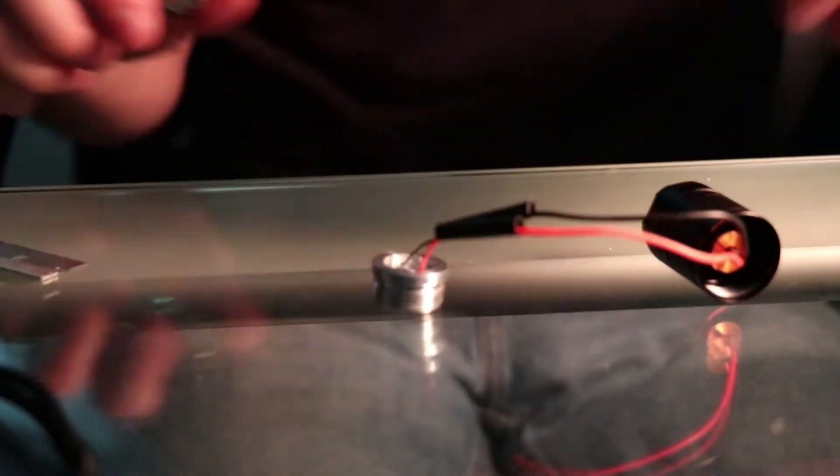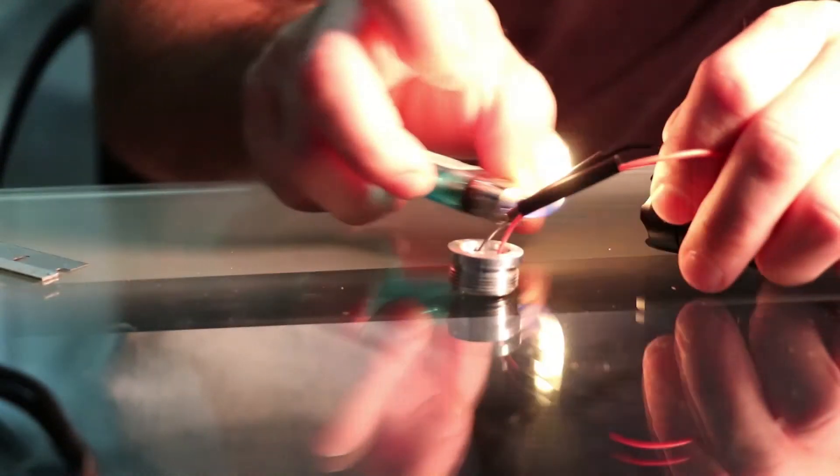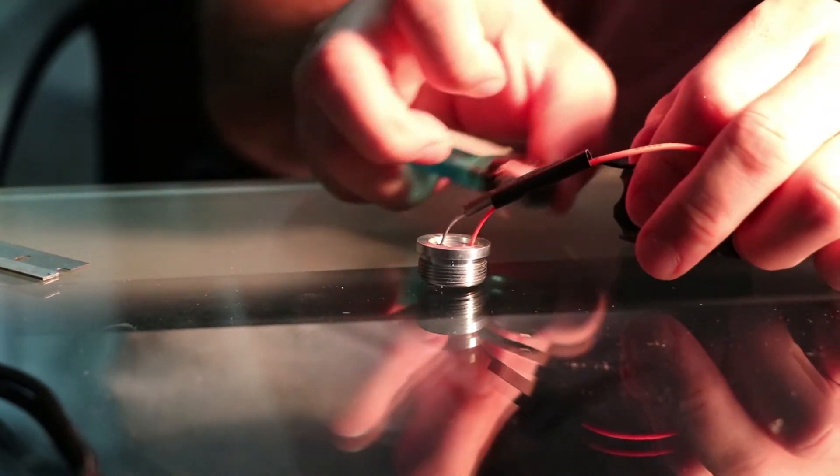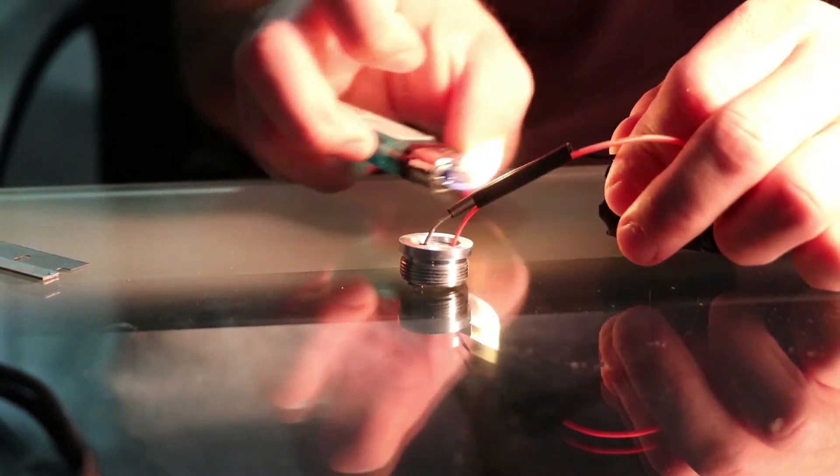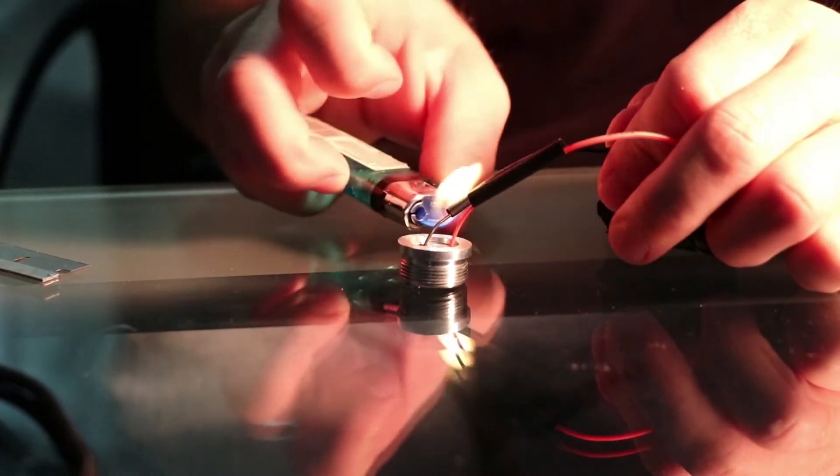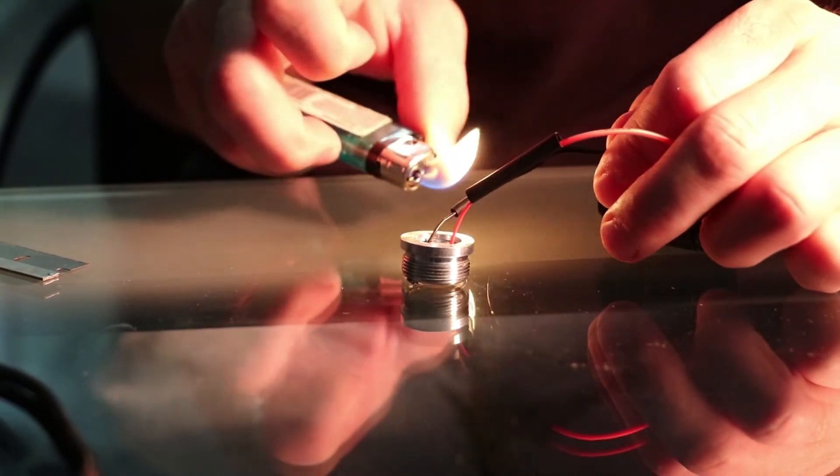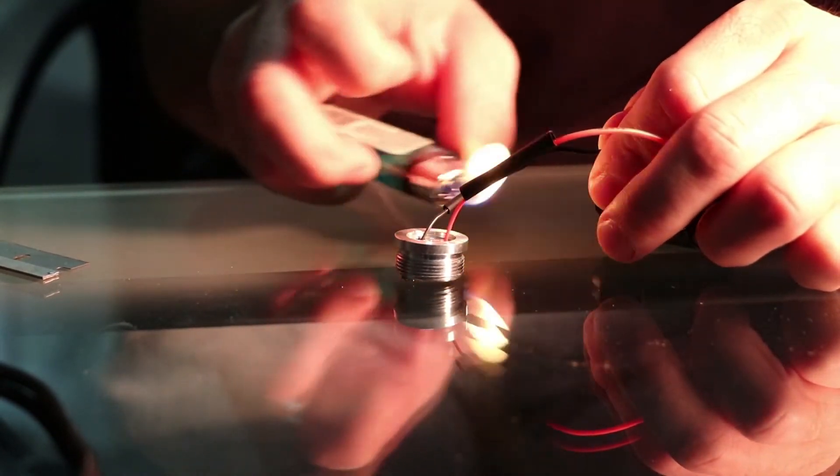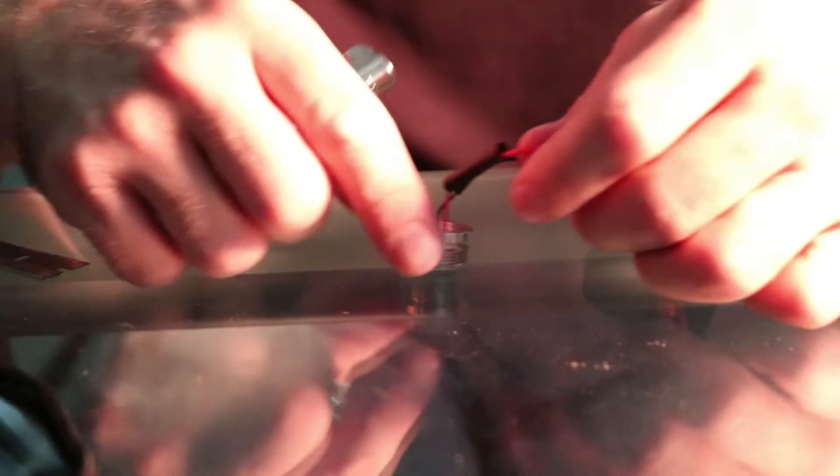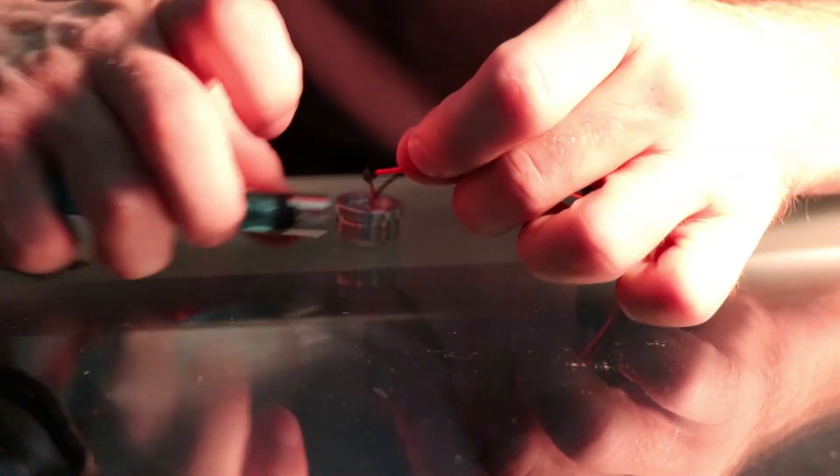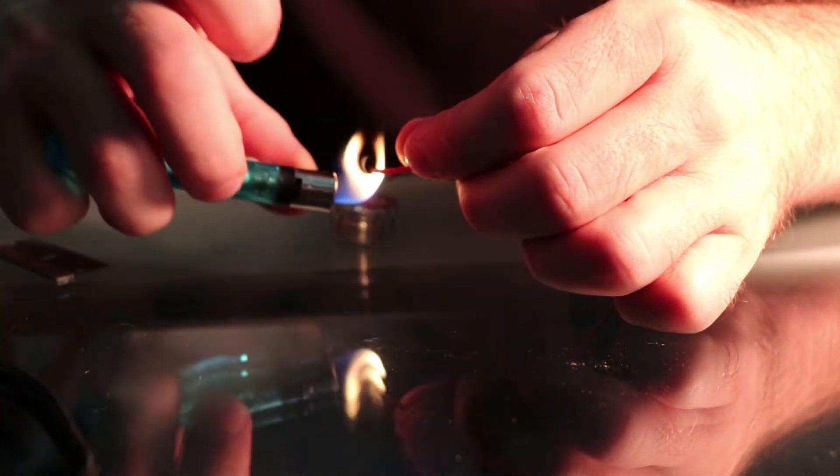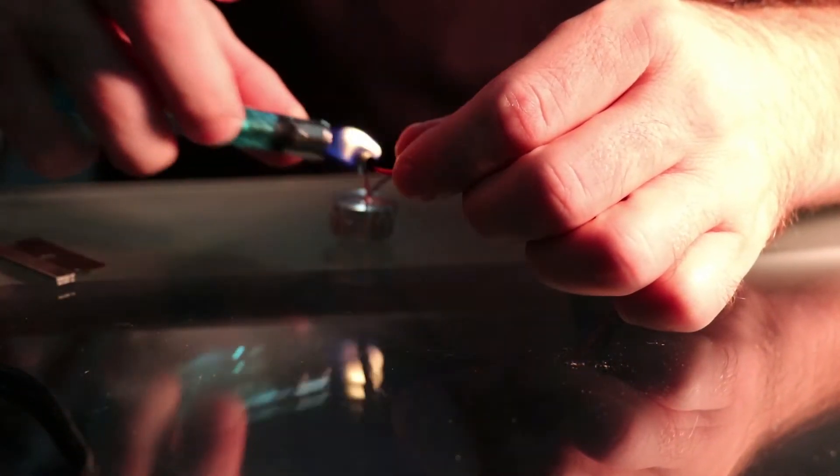And then this is obvious: black to black, red to red. You're going to solder it. Heat shrink together. Don't want to catch your heat shrink on fire though, that would be bad.